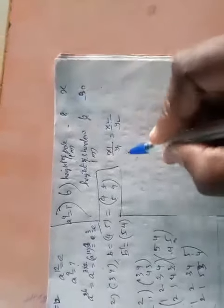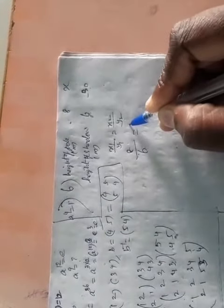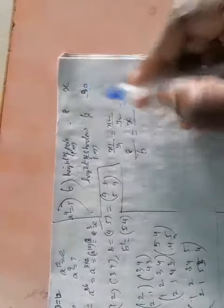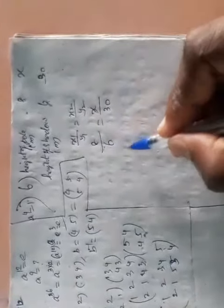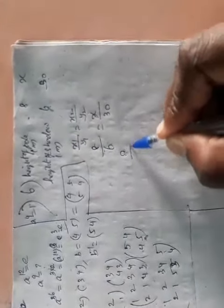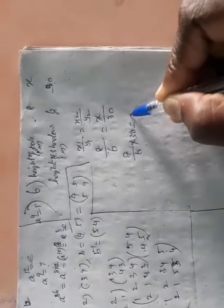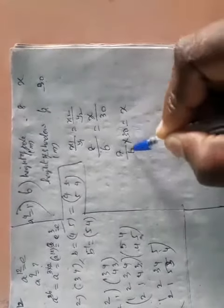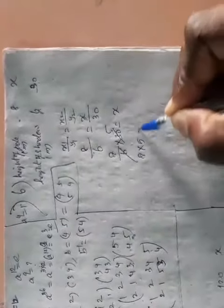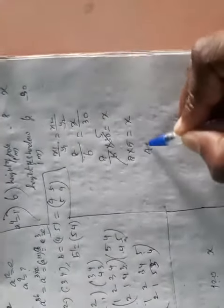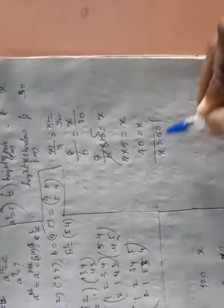Direct proportion: x1 by y1 equals x2 by y2. x1 is 8, y1 is 6, equal to x2 is x, y2 is 30. Taking x to the left-hand side: 8 by 6 multiplied by 30 equals x. 6 divided by 6 gives 5 times, so 8 into 5 equals x. 8 times 5 is 40, therefore x equals 40.